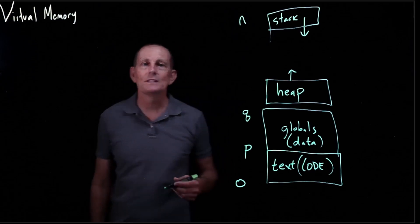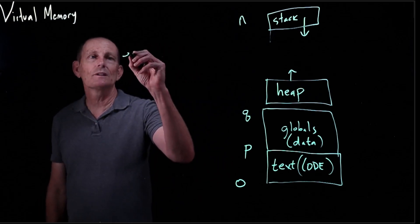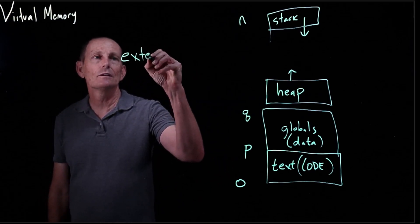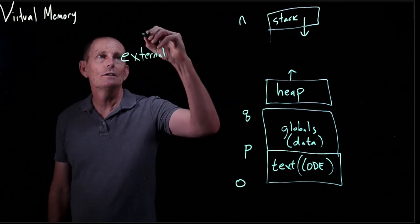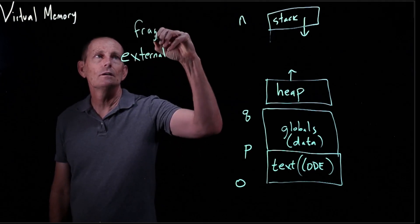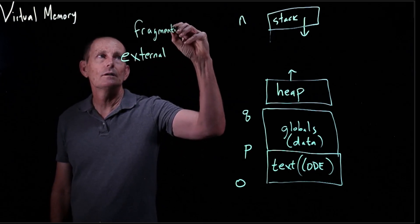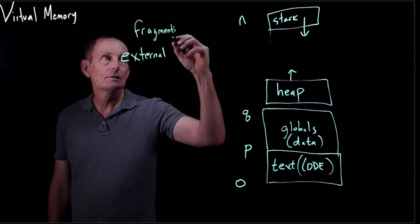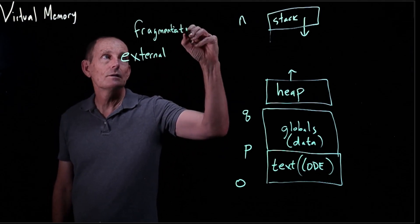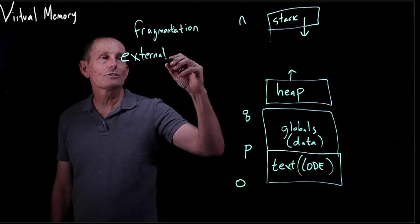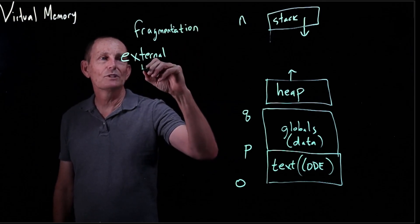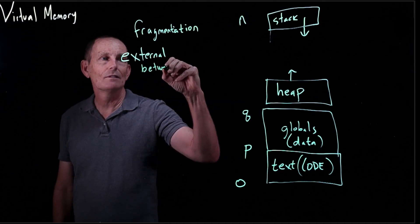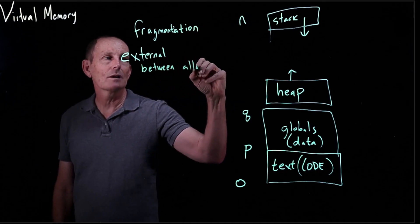Just a reminder on the fragmentation. We have two types of fragmentation. So we have the external, which is between allocated memory blocks.